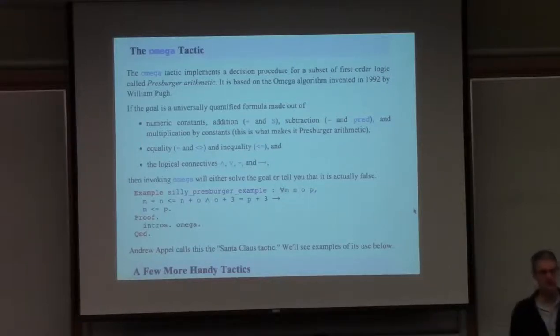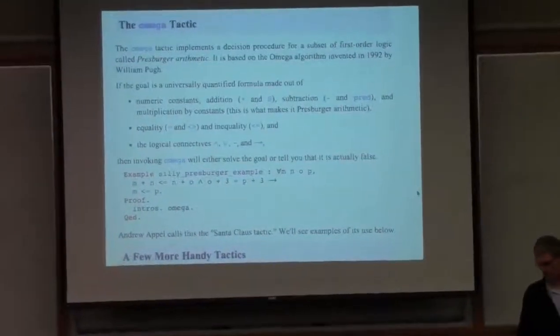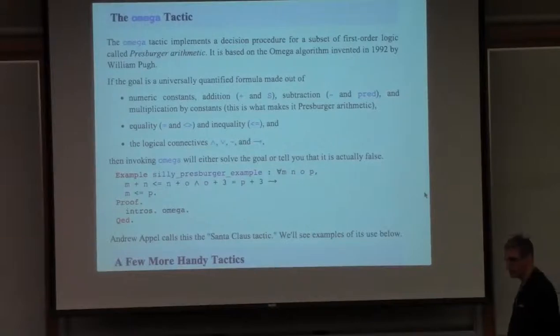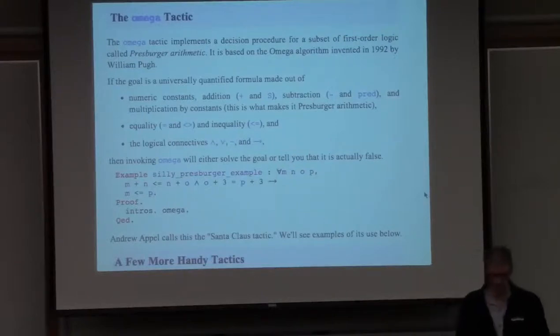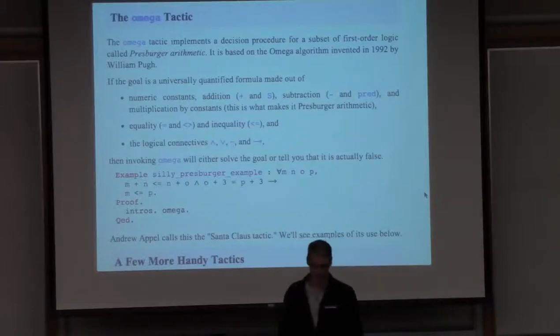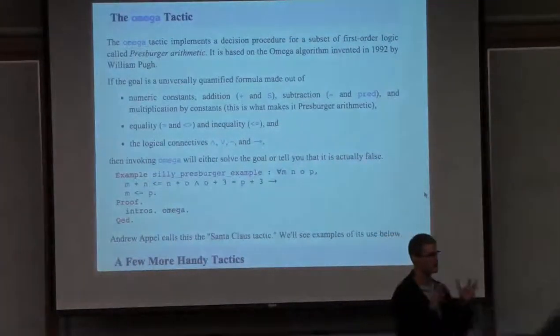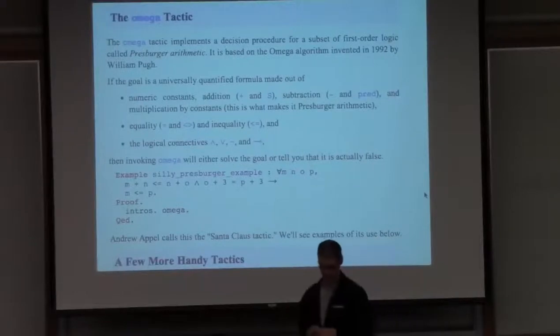Coq has lots of specialized built-in tactics or library tactics that people have contributed. One of them is a library called Omega that implements Bill Pugh's Omega decision procedure for Pressburger arithmetic. So it's quite convenient if you find yourself with simple arithmetic constraints and you're annoyed doing all the low-level arithmetic manipulation, try Omega.